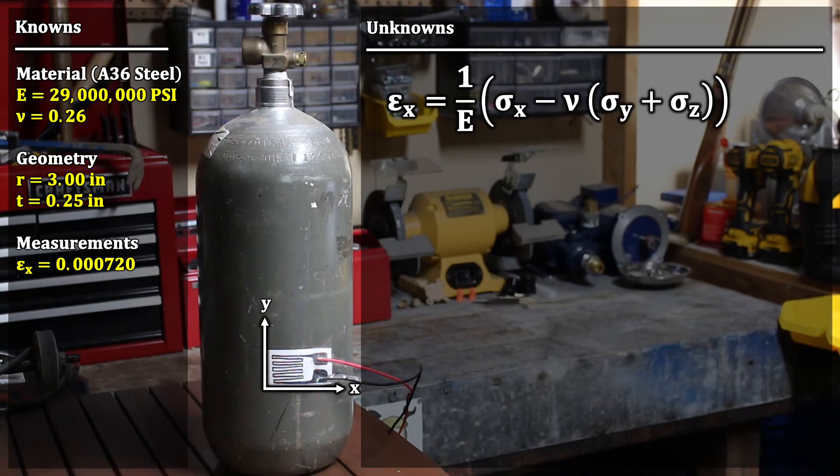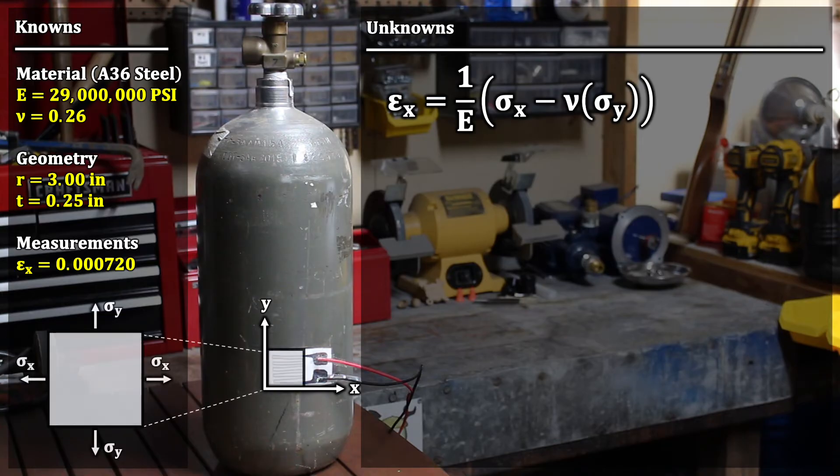The z-direction is just exposed to open air. There's no load that can resist any stress, so the stress has to be 0. So the equation reduces to just 1 over e times the normal stress in the x-direction minus Poisson's ratio times the normal stress in the y-direction. So now we just need to define the normal stress in the x-direction and the normal stress in the y-direction in terms of pressure, and then solve the problem.